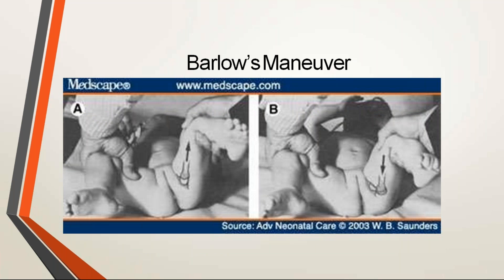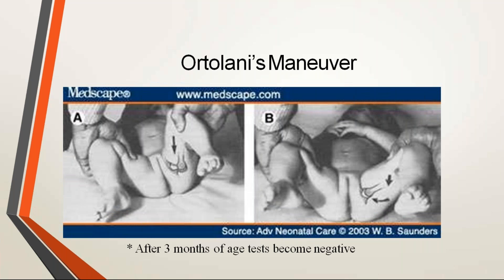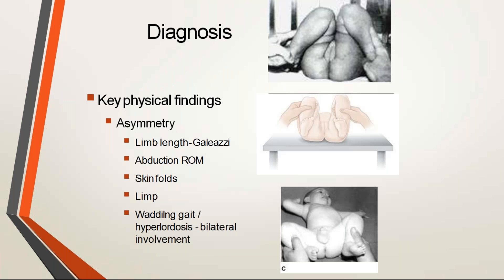The Barlow maneuver is the reverse of the Ortolani maneuver. In the Barlow maneuver, you are dislocating the hip. You apply outward pressure and adduction — the opposite of Ortolani. This allows you to dislocate a normal or unstable hip. This is the clinical test you need to perform on every newborn baby to identify DDH.